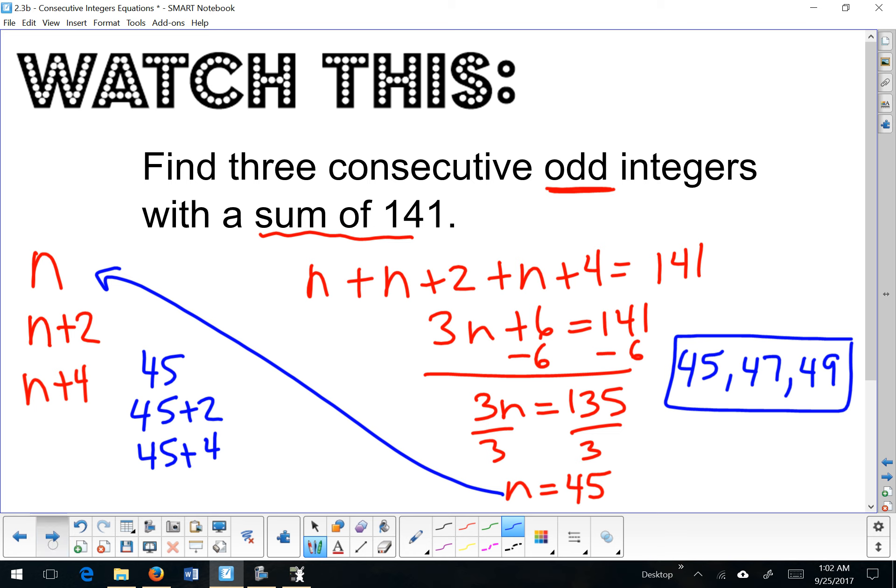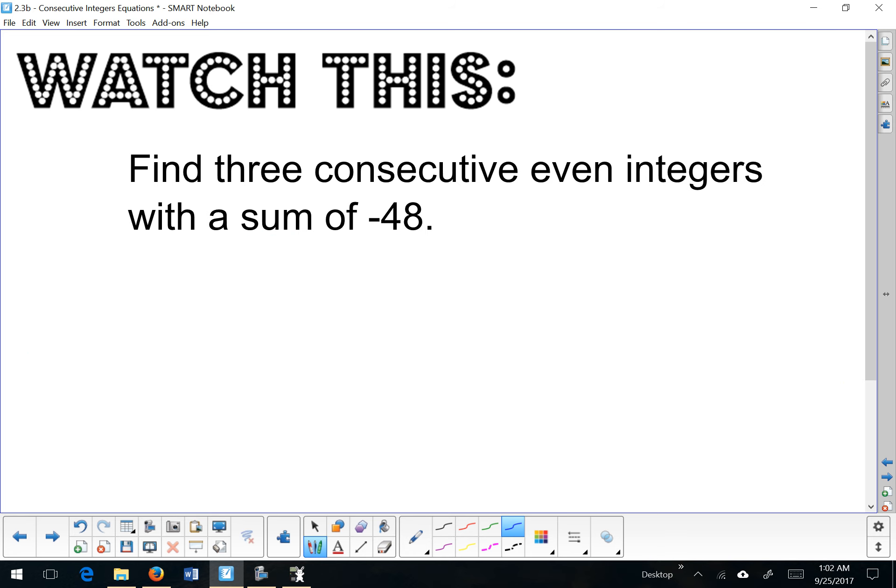Last one. Find three consecutive even integers. So that's a skip value there with a sum of negative 48. Even means I skip by twos. So first, second, third values, a sum of negative 48. So combine like terms. Use my inverses here.